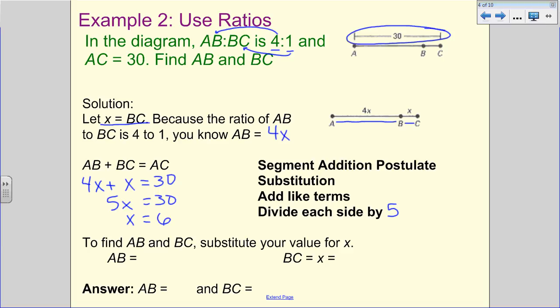Once I do that, I get X is equal to 6. Now I need to make sure I can find AB and BC. We substitute our value for X. AB, when we look back at our diagram, was 4X. So since AB was 4X, that's going to be 4 times 6, which is 24. BC was just X in our diagram. So BC equals 6. So my answers are AB is 24 units and BC is 6 units.